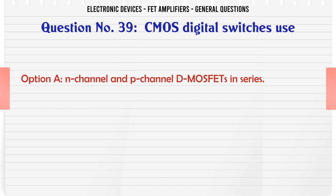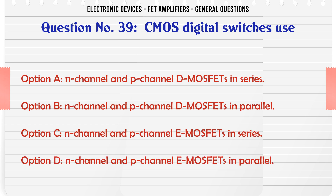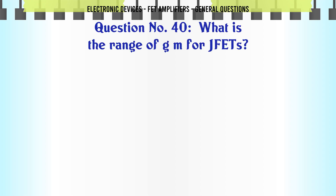Most digital switches use: A. N-channel and P-channel D-MOSFETs in series. B. N-channel and P-channel D-MOSFETs in parallel. C. N-channel and P-channel E-MOSFETs in series. D. N-channel and P-channel E-MOSFETs in parallel. The correct answer is N-channel and P-channel E-MOSFETs in series.